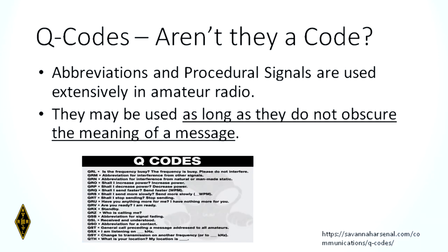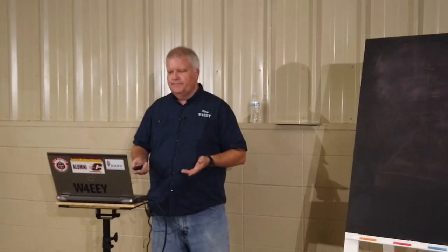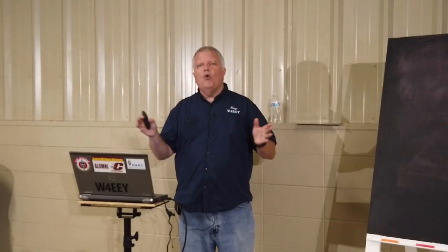Q codes — QSO, QRM, QRN — those are codes, aren't they? Their meaning is widely known, so they're considered procedural signals, not codes. You can use codes as long as they don't obscure the meaning of a message. A popular code is CUL — CULater — used in Morse code and also in text messages now. It's commonly known, so you can do that.